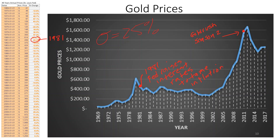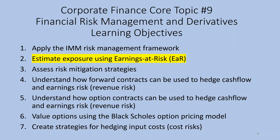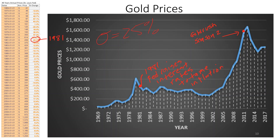We want to estimate exposure using Earnings at Risk, or EAR, which is a stochastic measure of risk. We're going to measure the risk exposure to gold for Hoffman Mines. I collected some data on gold prices — here is a graph of annual gold prices from 1969 to 2017, with a low of less than $100 per ounce and a high of about $1,600 an ounce.